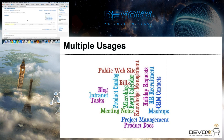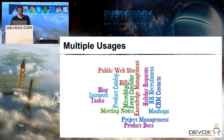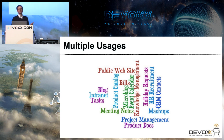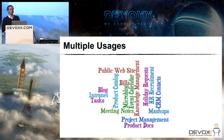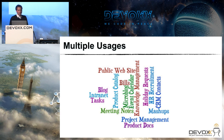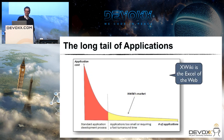Let's go back to the slides. In a few minutes, we've created a very simple application. What's interesting is that with this concept, we can have multiple usages for a wiki — much more varied than what you're used to with simple wikis where you can only enter free-form data. You can build a blog, intranet, collaborative intranet, public websites, mashups, product management, meeting notes, and so on. The usages are huge.